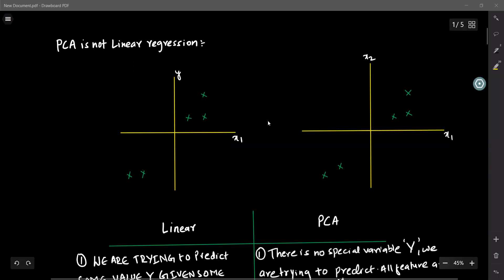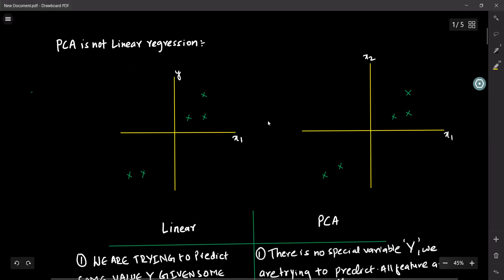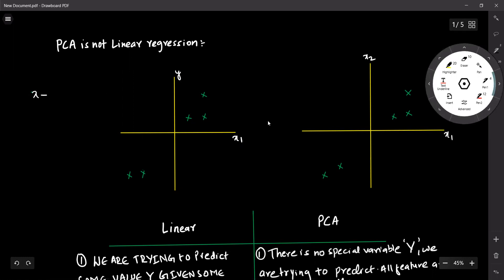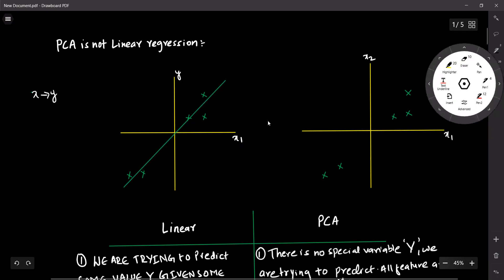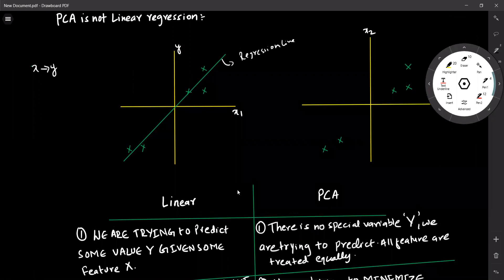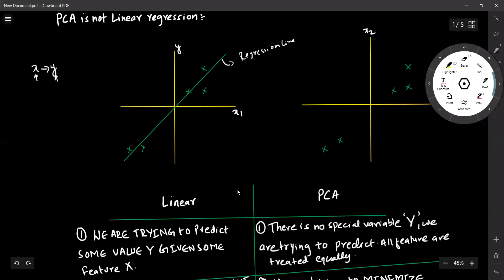In this first diagram, we have value x and we are predicting some value y. If we have x and we are predicting y, then this is called linear regression. Here my linear fitted line will be something like this — this is my regression line. So in linear regression, we are trying to predict some value y given some feature x.